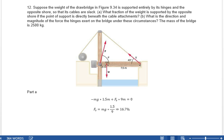Now, part B, the sum of the forces. So, that gives us f at the hinge, minus mg, plus mg times 1.5 over 9, equals zero.